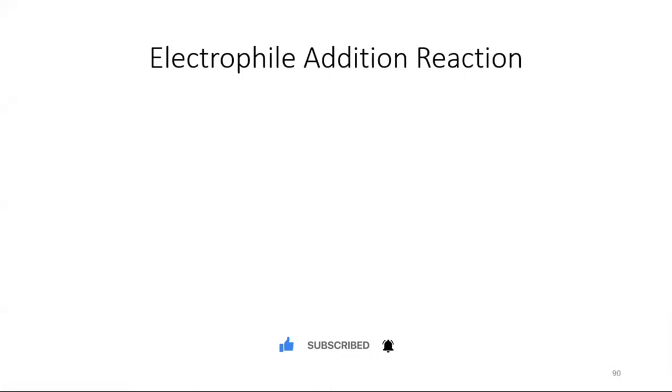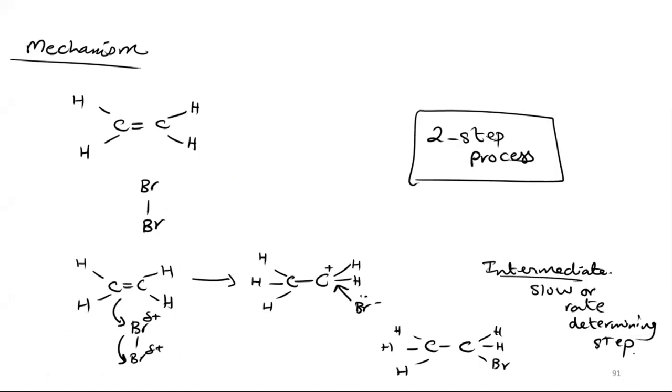We have completed Alkenes. Now I will give you an overview of the Electrophilic Addition Reaction. The Addition Reaction is basically an Alkene reaction and its mechanism. This is a two-step process. You have C2H4 and Br2.